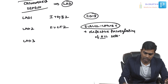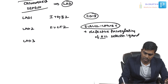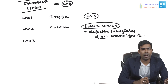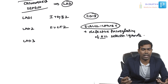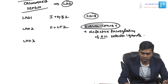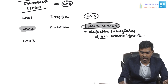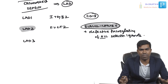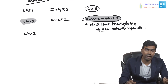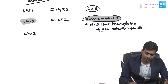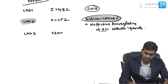There is defective fucosylation of all selectin ligands, not only Sialyl Lewis X. This results in Leukocyte Adhesion Deficiency type 2. Sialyl Lewis X is one of the key selectin ligands and is particularly important to understand in LAD2.